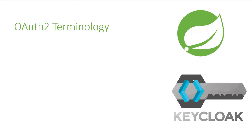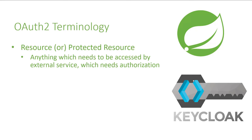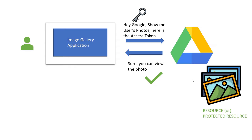To implement OAuth and understand different kinds of OAuth flows, you need to get familiarized with different types of OAuth terminology. The first one is called a resource or a protected resource. In our image gallery application example, the resource or protected resource is the images or photos stored inside our Google Drive account. Anything which needs to be accessed by an external service and which needs authorization to access it is called a resource.